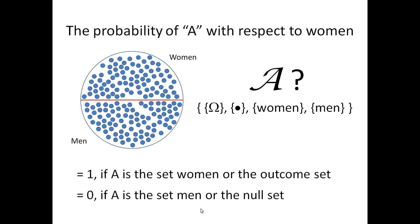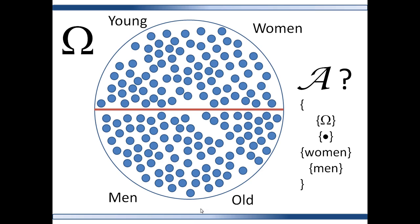The more subsets that the sigma algebra is constructed from, the more information can be gleaned and therefore the more questions that you can ask and answer. So if this is the outcome set and it's further divided by young and old, then your sigma algebra can have many more sets: men, women, a set young, a set old, a set young men, a set young women, old men, and old women.